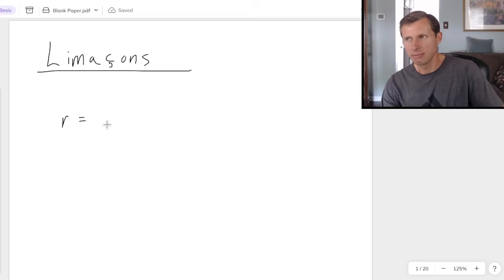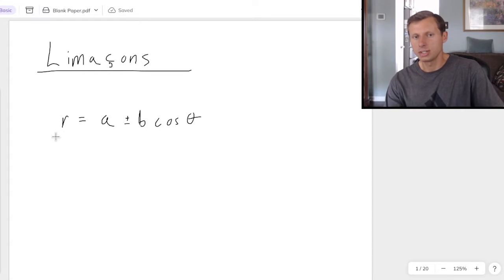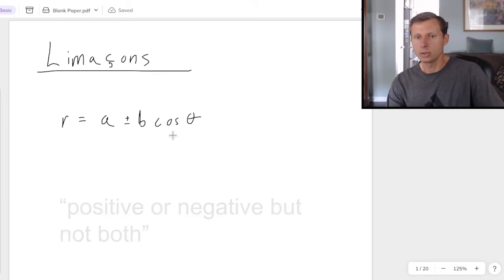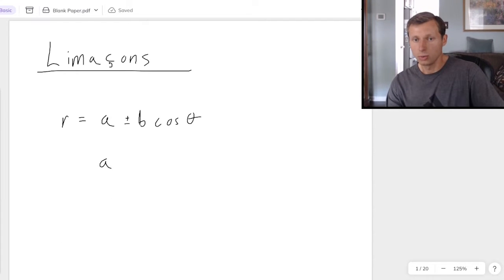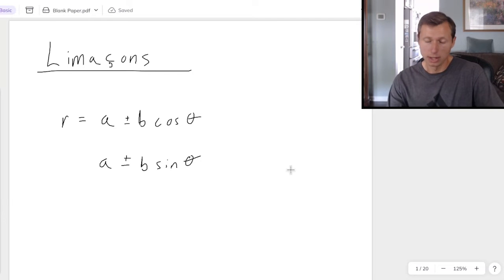All limaçons basically have the formula R equals A plus or minus B cosine theta. The R stands for radius, which hopefully you already know how to graph other polar functions, or else this is probably not the best video to start with. A and B are constants. The plus or minus is because it can be positive or negative. And cosine theta can also be replaced with sine theta. In other words, you could also have this function as well.